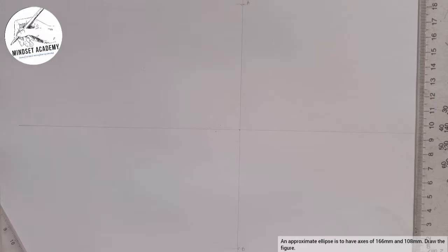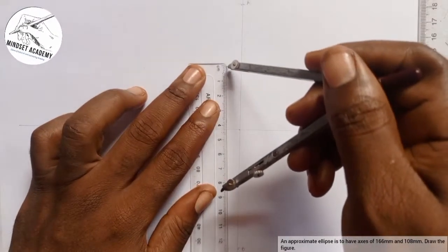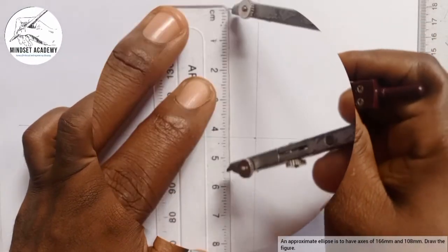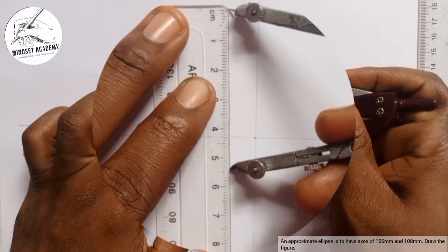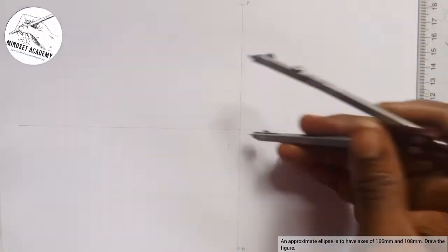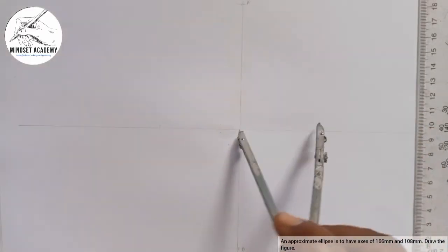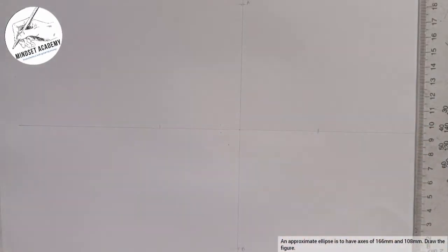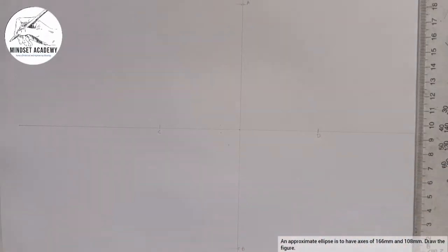Now the next thing I am going to do is the minor axis, and the minor axis is given as 108, which will give us 54, half of it is 54. I am going to measure 54 on my metal rule from 0, this is 50, and 54 will be here. I will place it at that same center, mark left and mark right, so that point will be point C and point D.